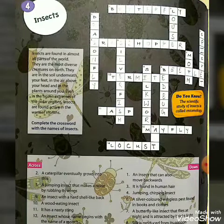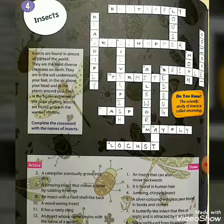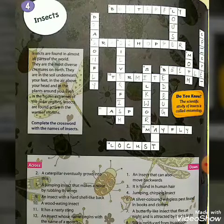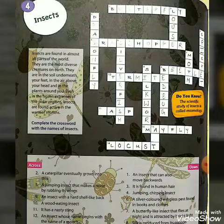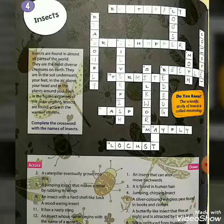Now ninth one, down side. A small wingless insect that feeds on blood. There are two number nines given — don't be confused. The down side question, your answer is bedbug.